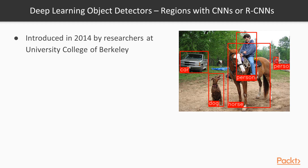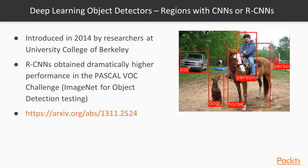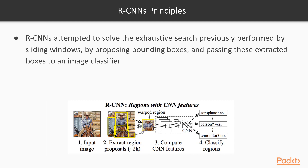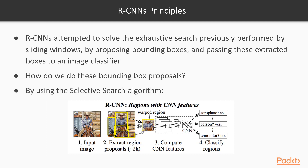In 2014, deep learning object detectors had a huge breakthrough with Regions with CNNs, or RCNNs, which achieved remarkably high performance in the Pascal VOC challenge — an object detection dataset used by researchers to assess detection methods. RCNNs solved the exhaustive sliding window search by proposing bounding boxes using an algorithm called selective search, then passing those extracted regions to a CNN to classify.